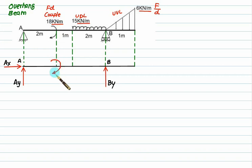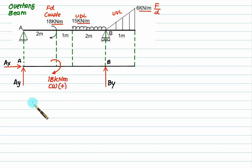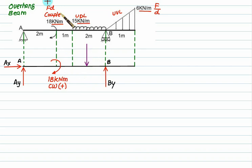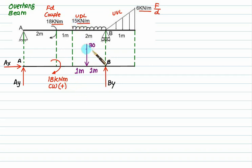We have a couple load of 18 kilonewton meter. Always write your sign convention — clockwise means positive value. For the UDL, it is a rectangular load represented by a point load equivalent to the area of the rectangle: 15 multiplied by 2. It will act exactly halfway, that is 1 meter from each side. So this load is 2 into 15 equal to 30 kilonewton.